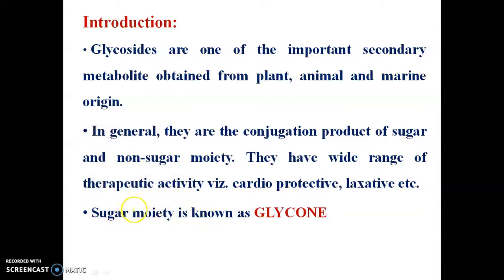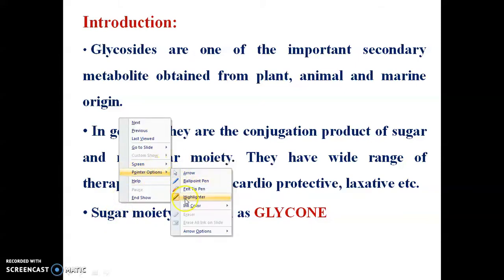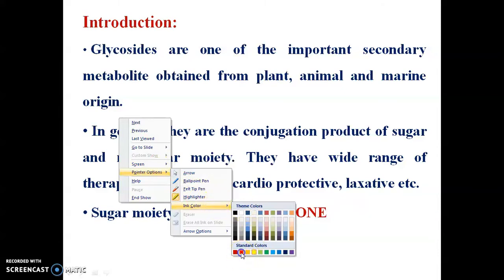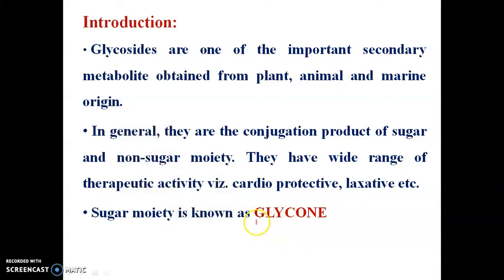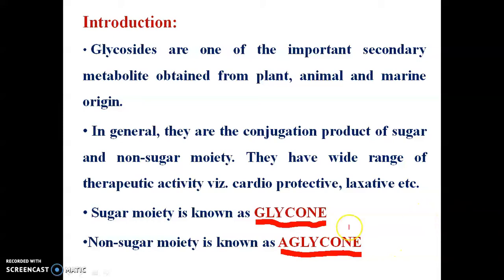The sugar moiety of a glycoside is known as glycone, whereas the non-sugar moiety is known as aglycone. So a glycoside is a combination product of glycone and aglycone.